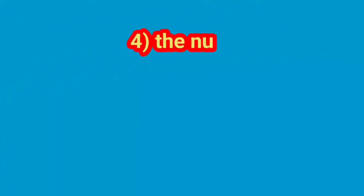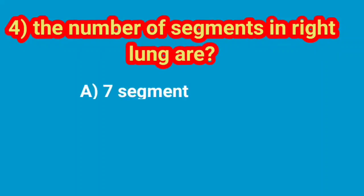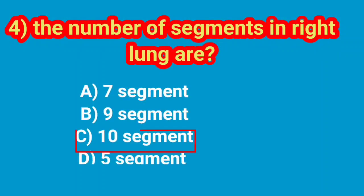Question number 4: The number of segments in right lung are? Correct answer is option C, 10 segments.